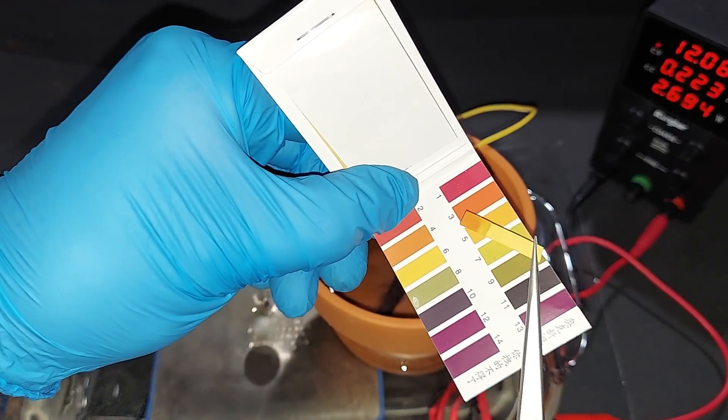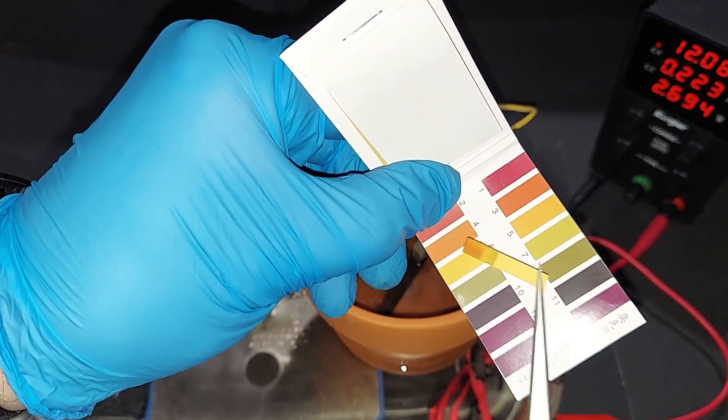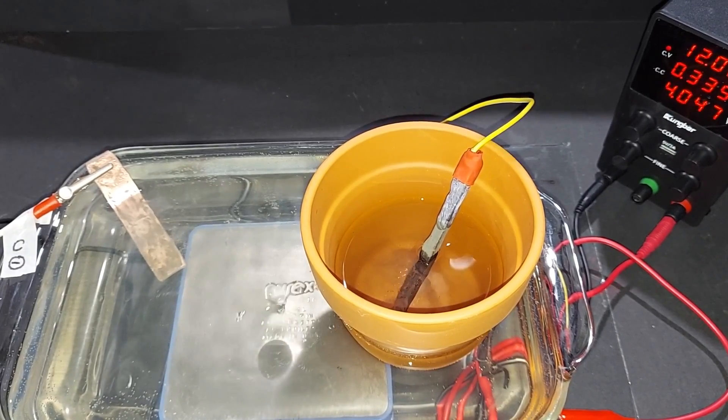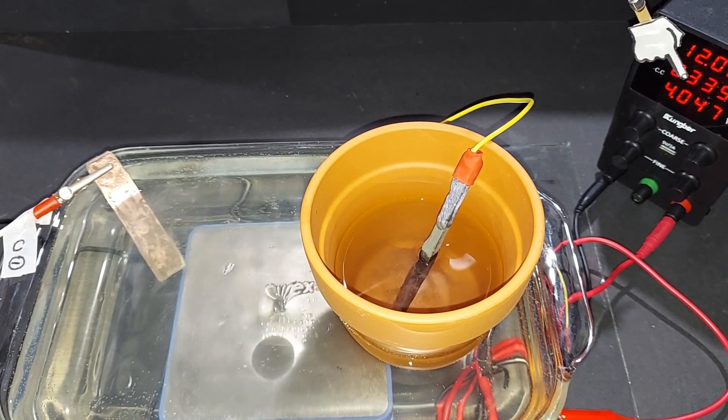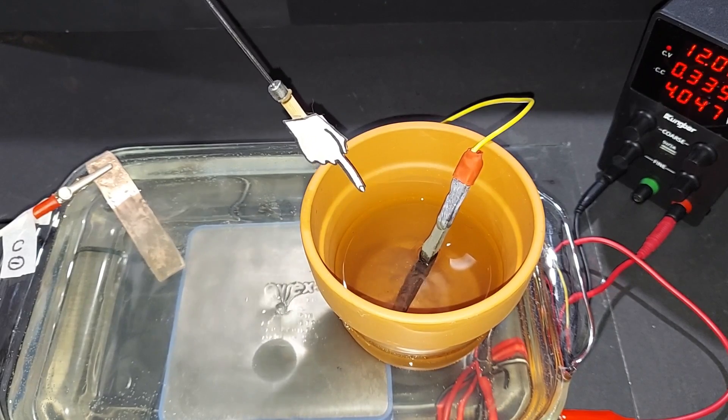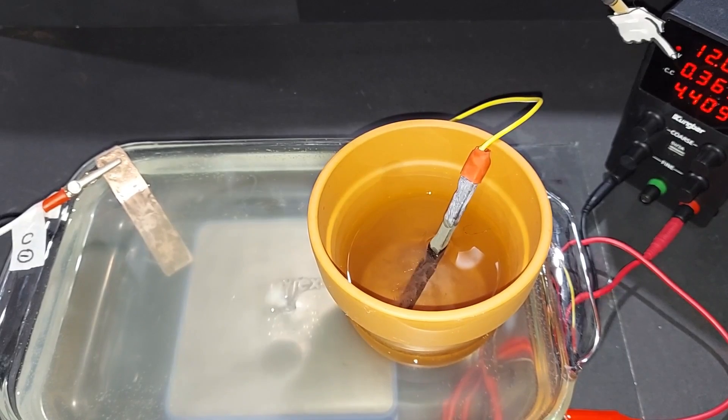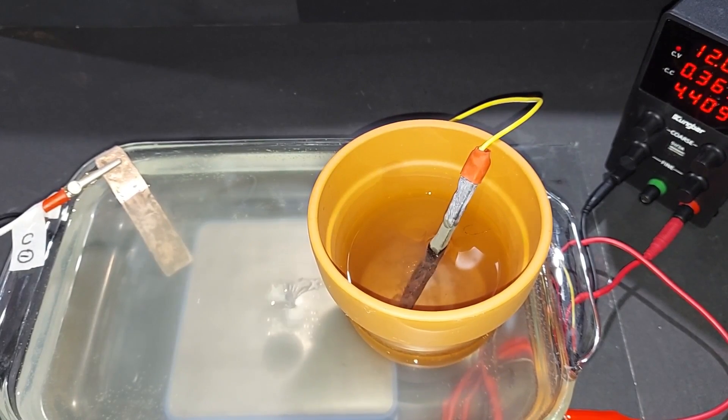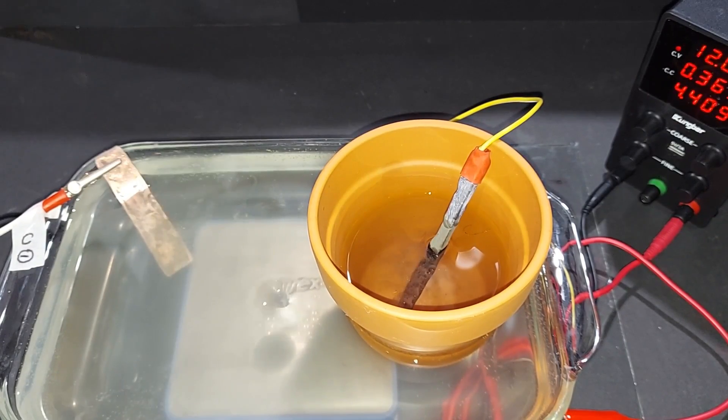We're two and a half hours out, up to 4 watts or 0.335 amps. It's climbed from 0.009, and this indicates how many ions are in solution. About three hours out, we're at 0.365 amps and 4.4 watts. What's becoming very noticeable is the magnesium hydroxide gathering on this side.